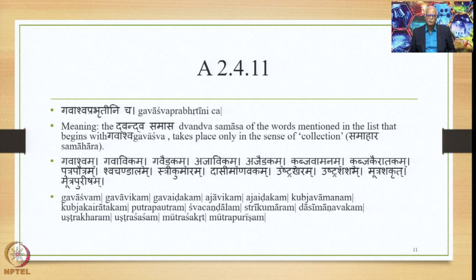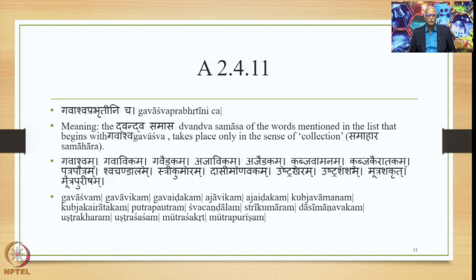So we have a list: Gavashvam, Gavavikam, Gavayadakam, Ajavikam, Ajayadakam, Kubjavamanam, Kubjakairatakam, Kutrapautram, Shvachandalam, Strikumaram, Dasimanavakam, Ushtrakharam, Ushtraśasam, Mutraśakrut, Mutrapurisham. Go and Ashwa both get compounded in the sense of Samahara only. Go and Avika also get compounded in this particular sense only.